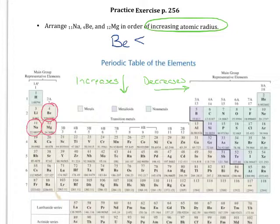So magnesium is going to be smaller than sodium but larger than beryllium, which means that sodium is going to have the largest atomic radius out of these three atoms.